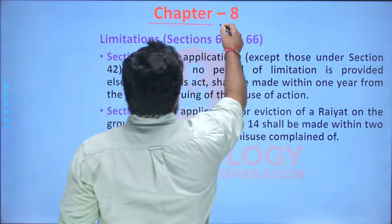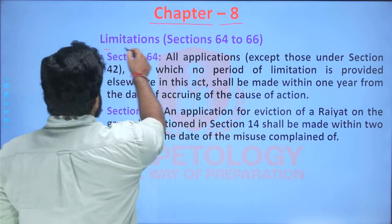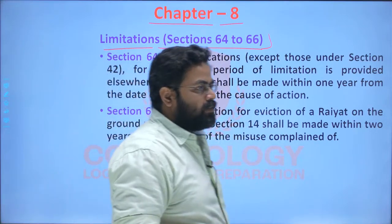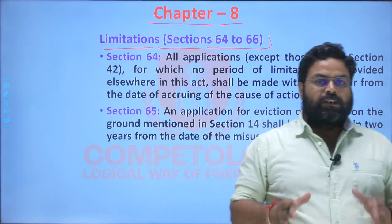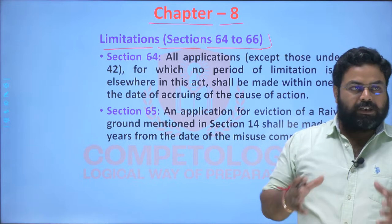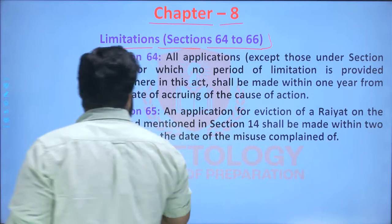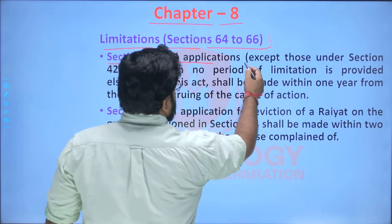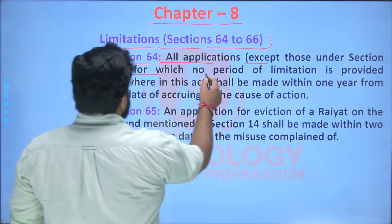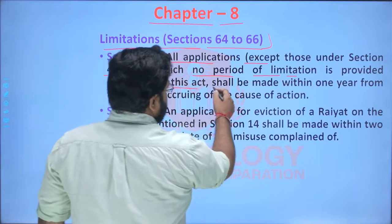The first topic of today is Chapter 8, and that is limitations on various issues. Sections 64 to 66 describe the limitations — what kind of limitations on appeal and what kind of limitations on various other aspects of this SPT Act are there. Section 64 says that all applications except those under Section 42, for which no period of limitation is provided elsewhere in this act, shall be made within one year from the date of accruing of the cause of action.